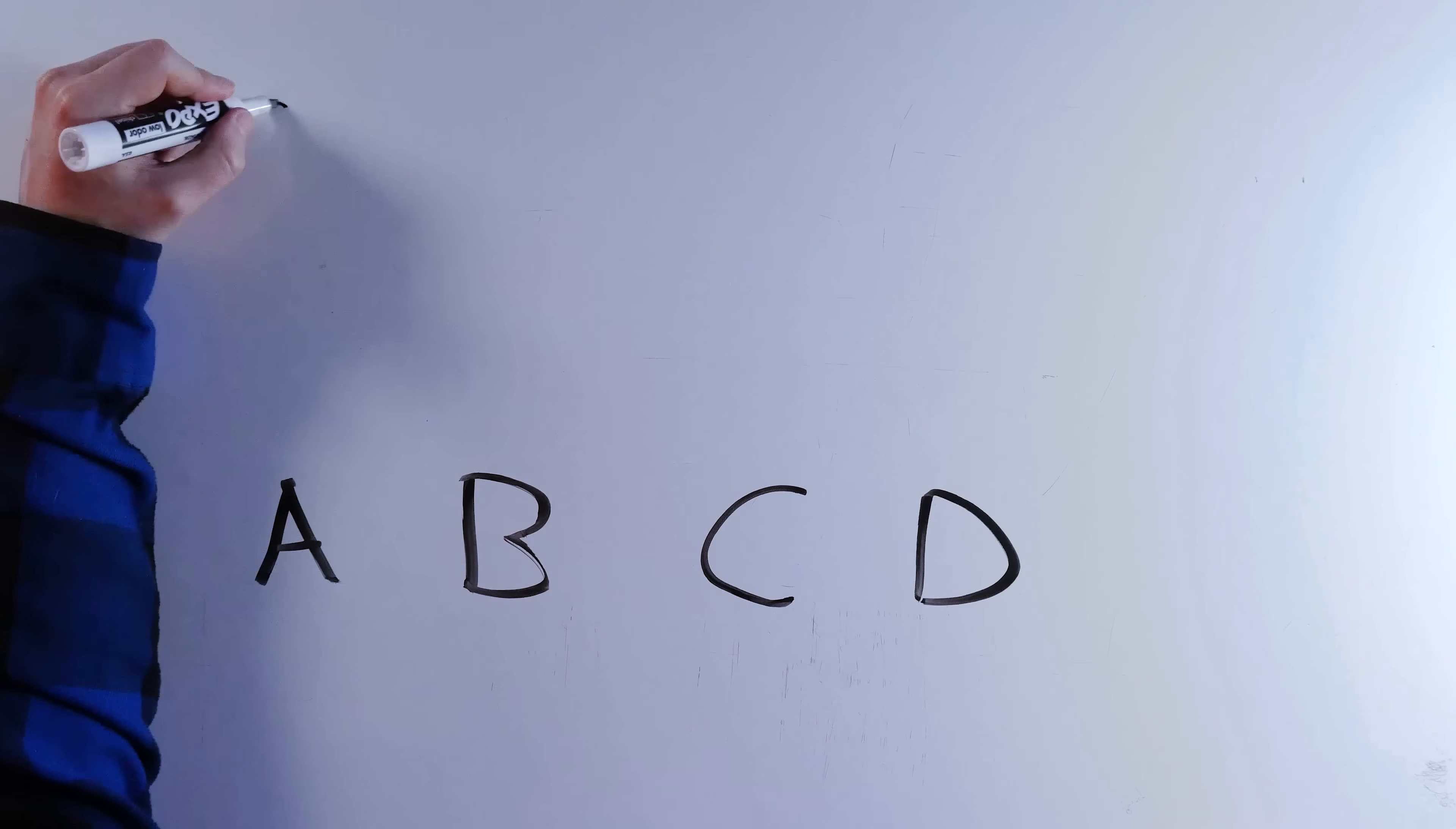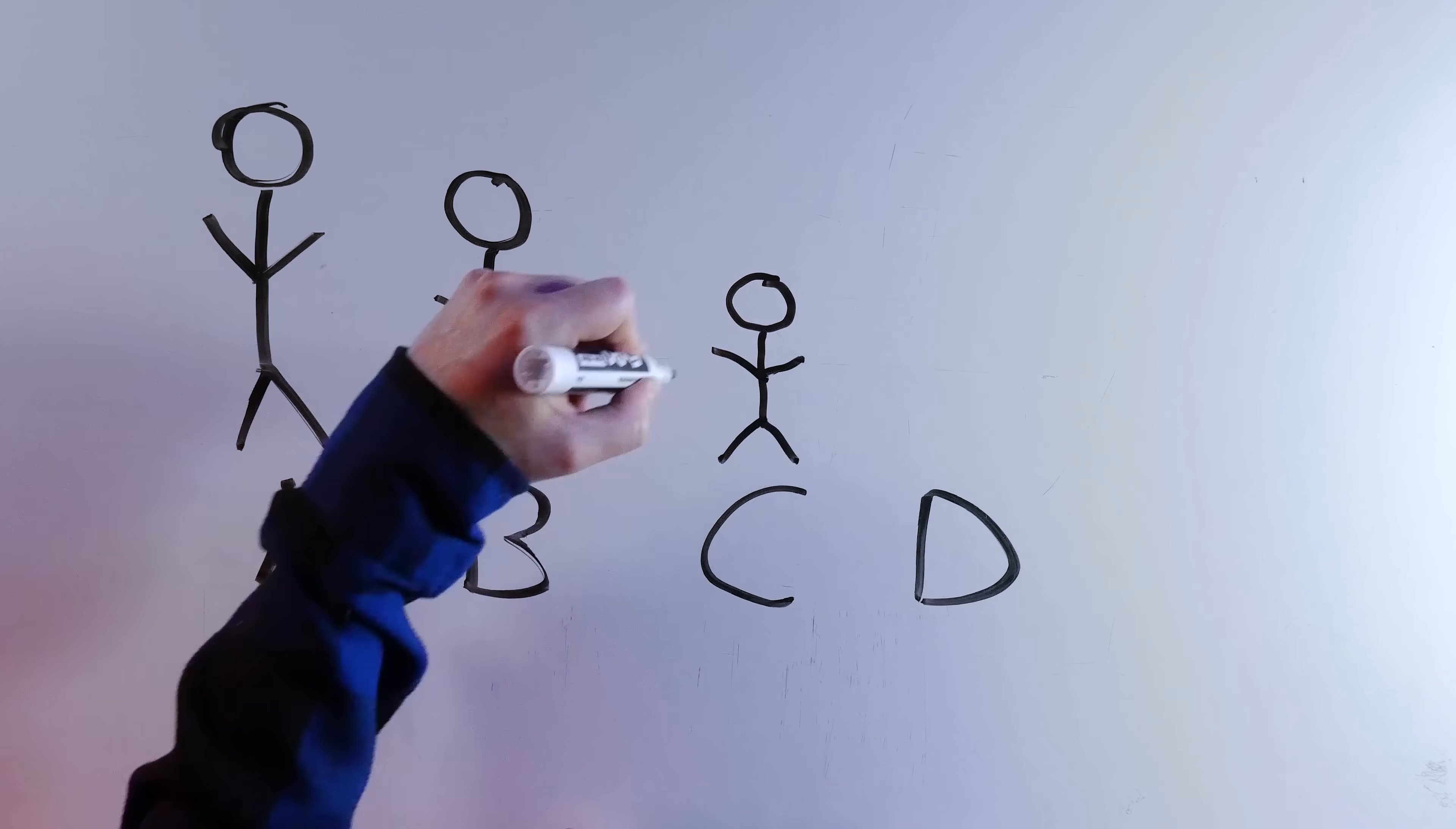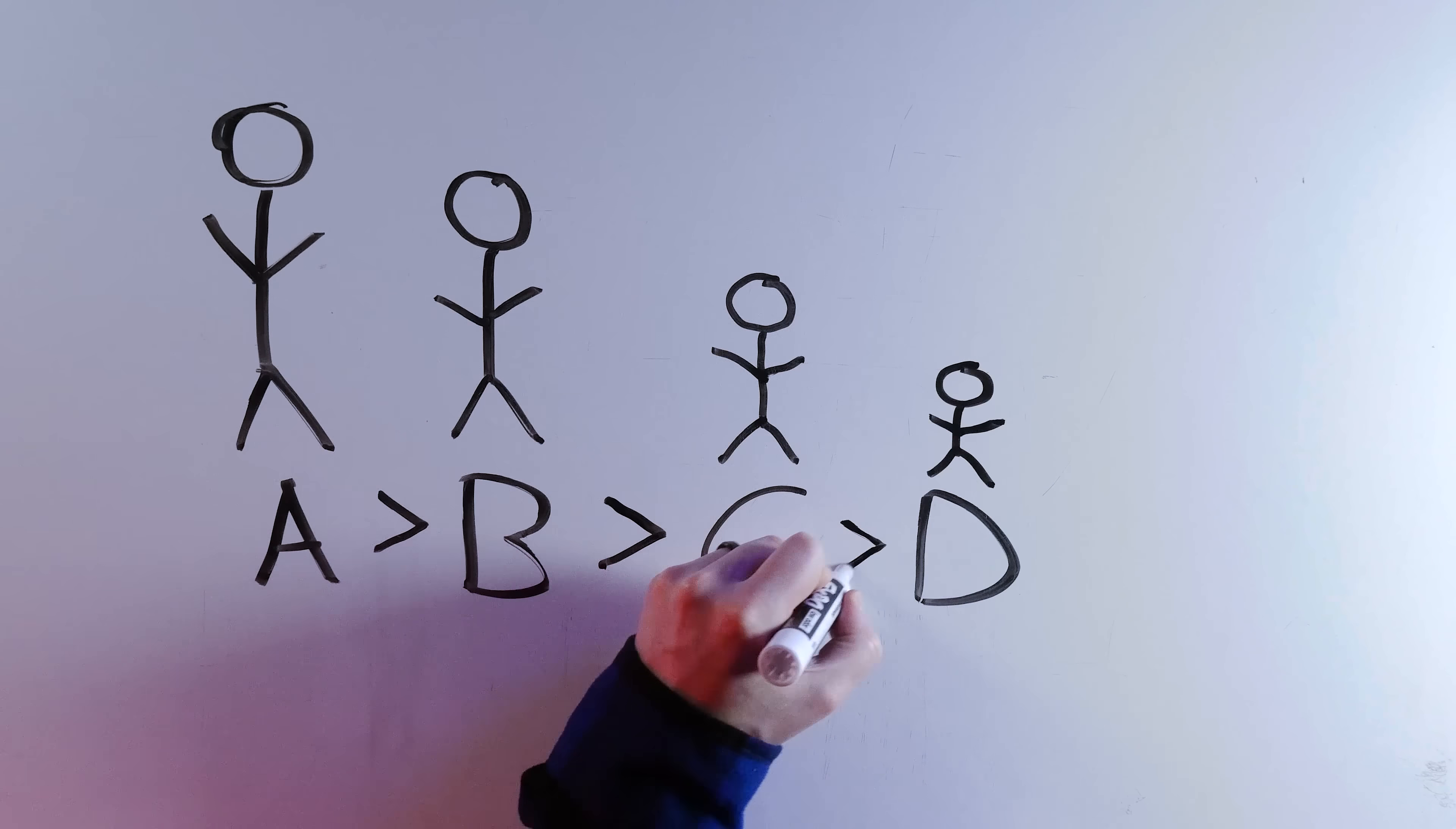It's like lining people up by height. Right, if A is taller than B and B is taller than C, then A has to be taller than C. Makes sense. Right?